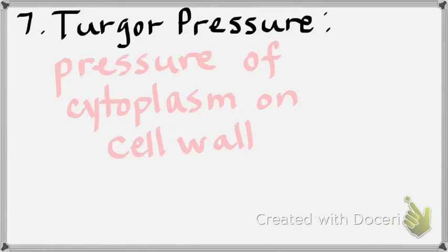Number seven has to do with plants — turgor pressure and cell wall. What kind of environment gives a plant high turgor pressure? Hypotonic. What kind of environment gives a plant low turgor pressure? Hypertonic. When you were feeling those potato strips, you were feeling for turgor pressure. When it was firm, that was high turgor pressure. When it was bendy, that was low turgor pressure.